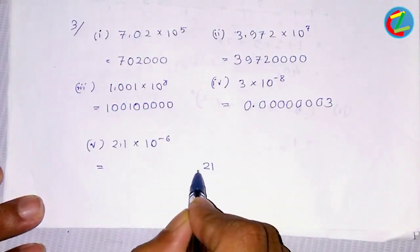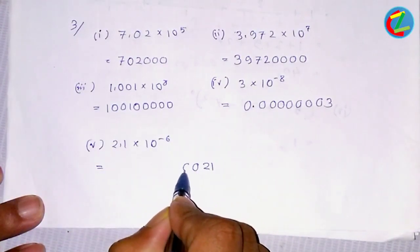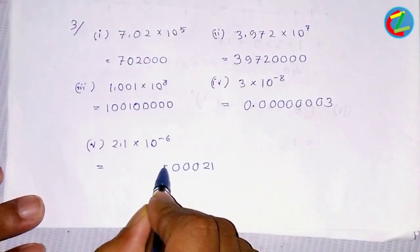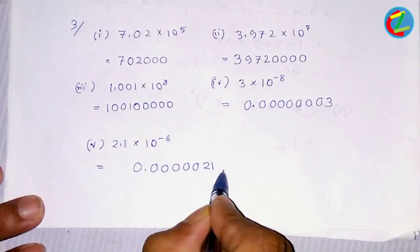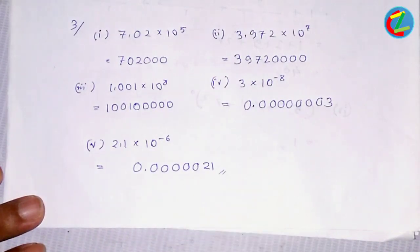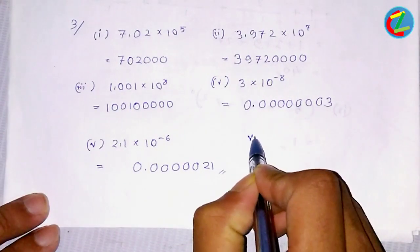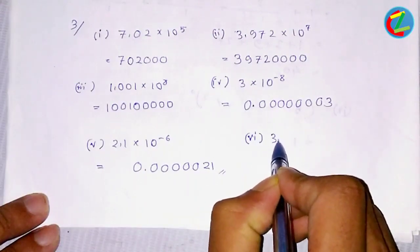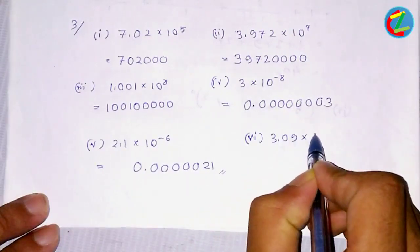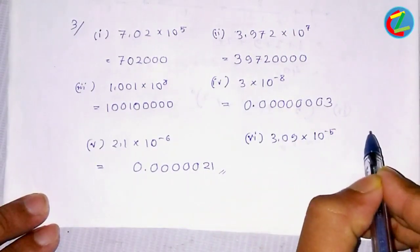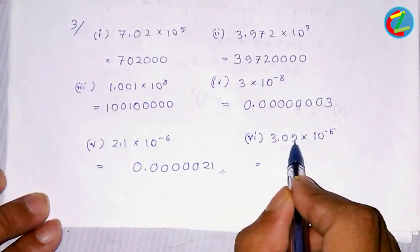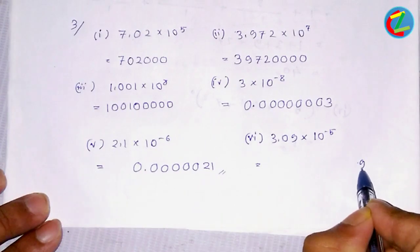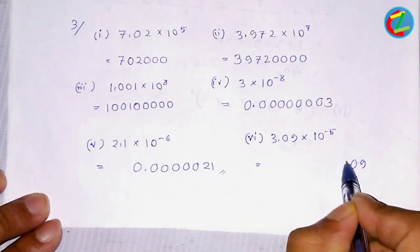This is the first step to 1.2 to 0.2 to 1.2 to 0.3 to 0.1. This is also the 3.09 × 10⁻⁵.